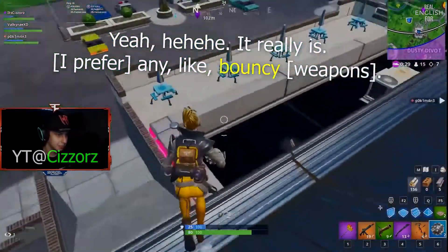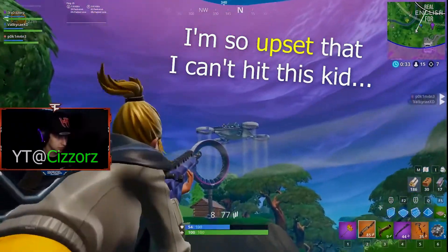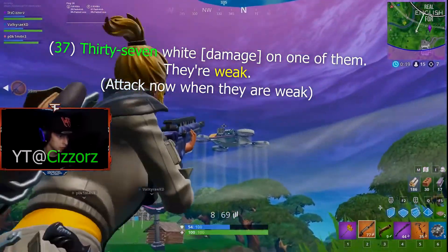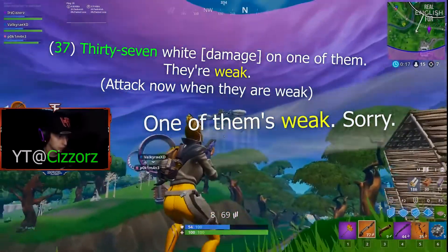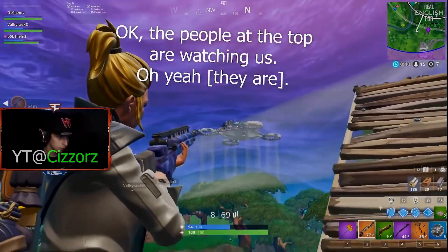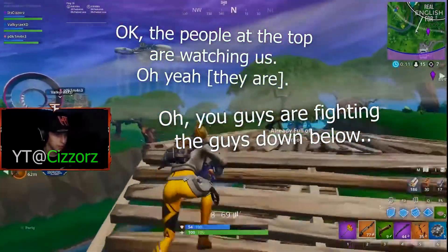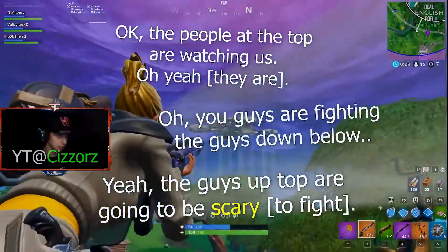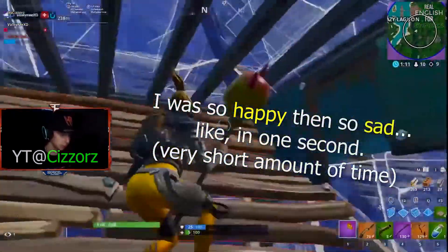Any like bouncy. I'm so upset that I can't hit this kid. 37 white on one of them. They're weak. One of them is weak. Sorry. There they go. Okay, the people up top are watching us. Oh, you guys are fighting the guys down below. Yeah, the guys up top are going to be scary. I was so happy then so sad, like in one second.